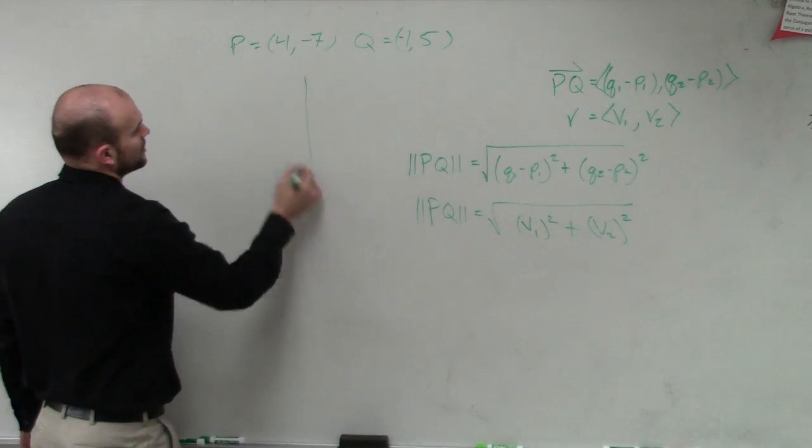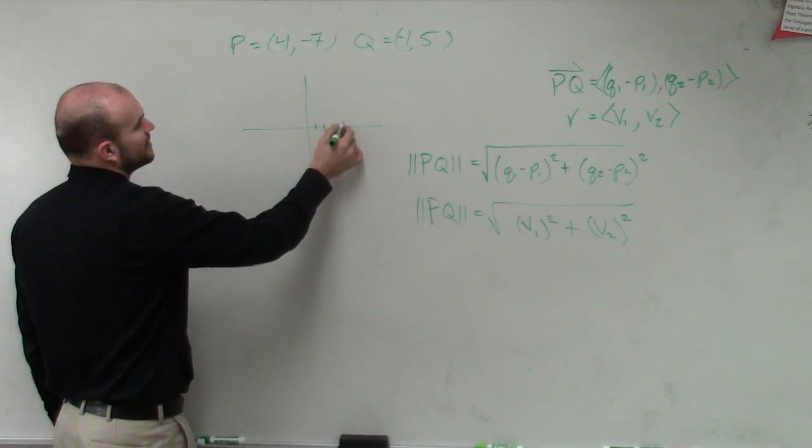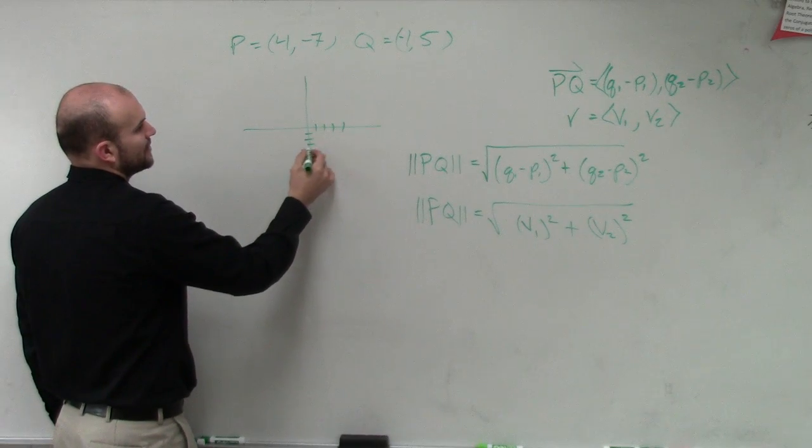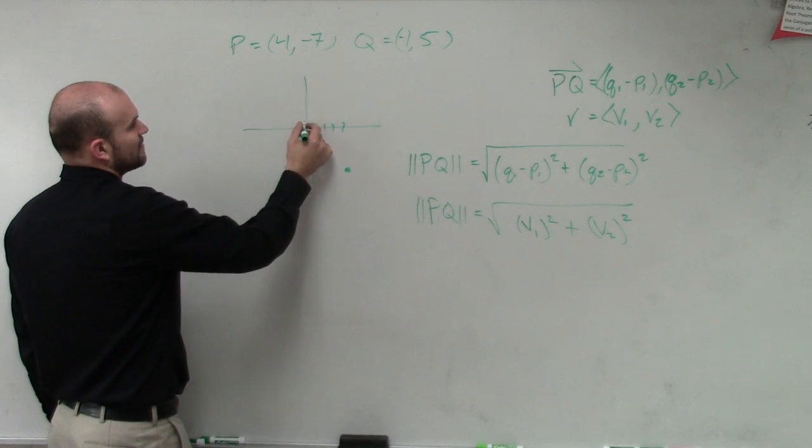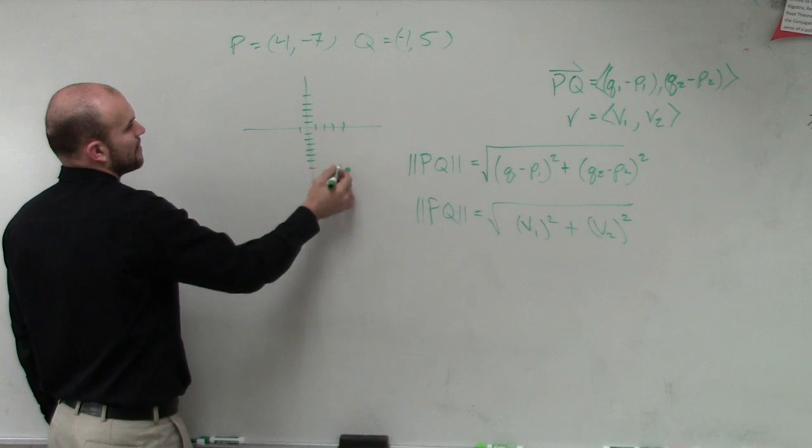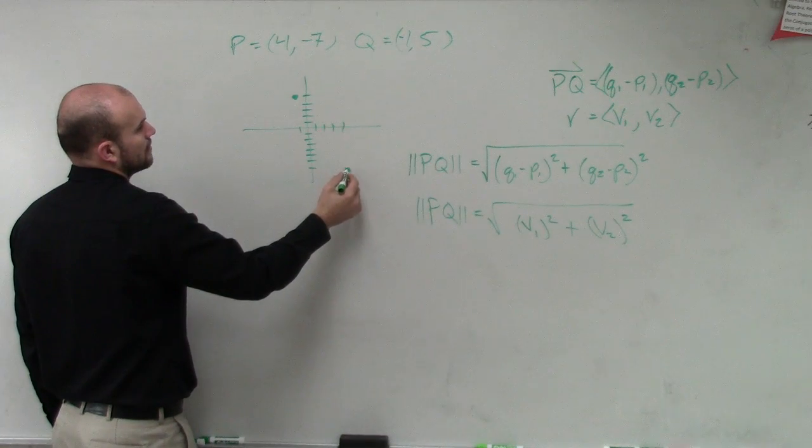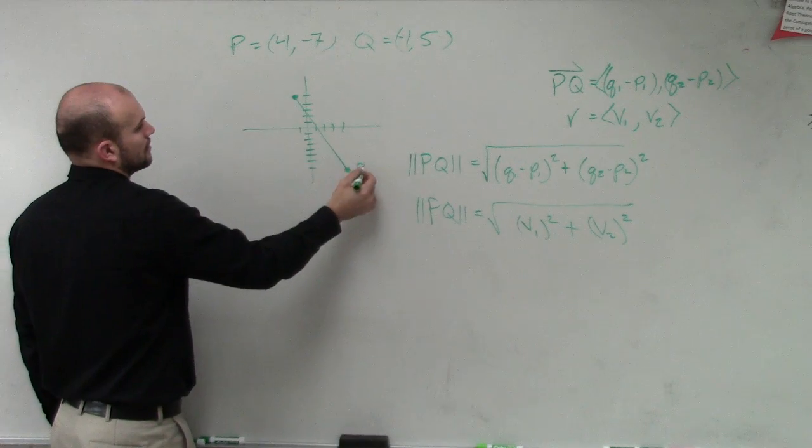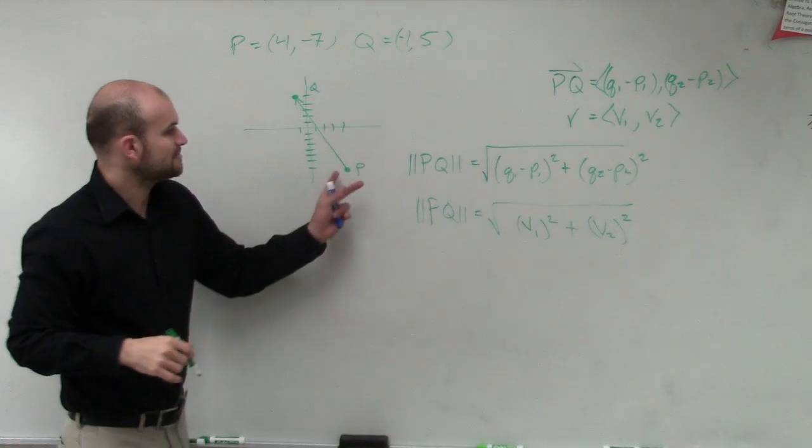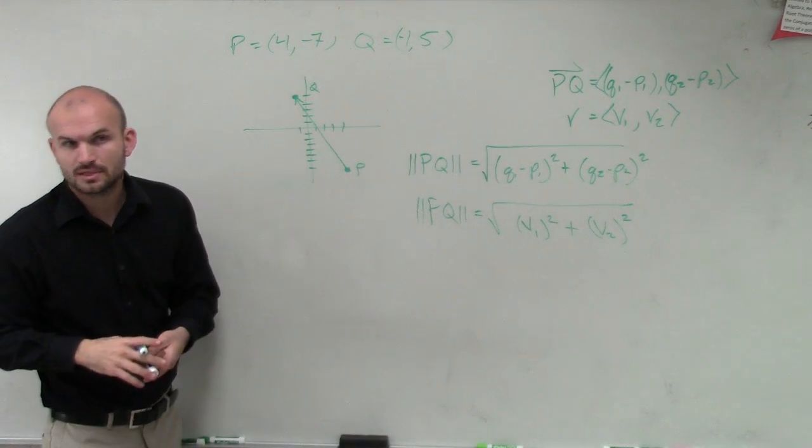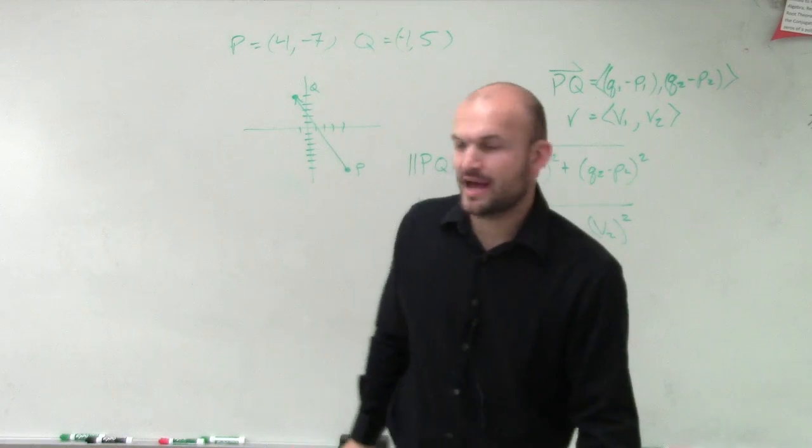So let's go and see what this would look like. So I have 4, negative 7, and then I have negative 1, 5. So there's my P and that's my Q.